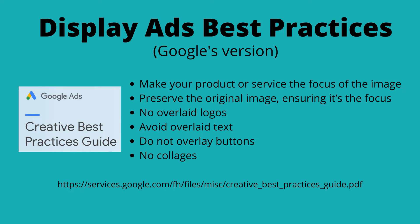I want to share a document that Google created called the Creative Best Practices Guide. This is for display ads in general, but the basic premise is that these are the best practices to get the best results with your Google Ads display advertisements. Here are some of the points I took away: number one, make your product or service the focus of the image. Preserve the original image, ensuring it's in focus. And don't have overlaid logos, overlaid text, overlay buttons, or collages. Some of these, like overlaid text or overlaid logos, I'd recommend testing for yourself to see if you truly do not get the best results with them.